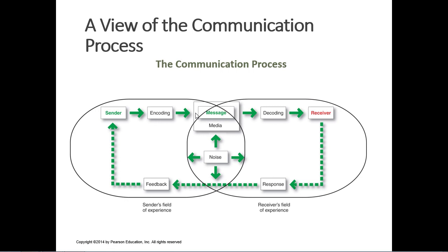Think about Avis and Hertz — if you're the secondary brand, it's okay to bring up the front runner. If you're Hertz, you don't mention Avis. The message should be clear, concise, and targeted to the segment you're trying to reach. Decoding is really where the receiver believes the message — they see consistency in how you encode it, who the spokesperson is, and whether they believe that person can speak to the benefits of the product.